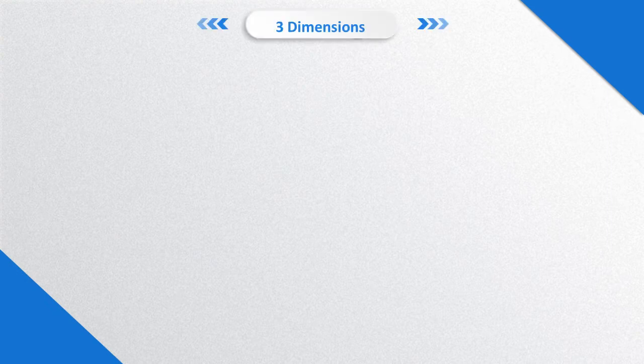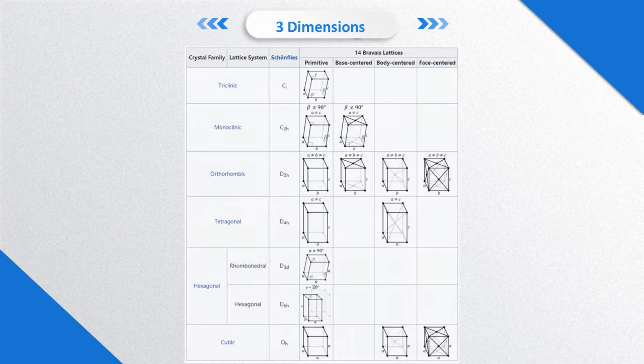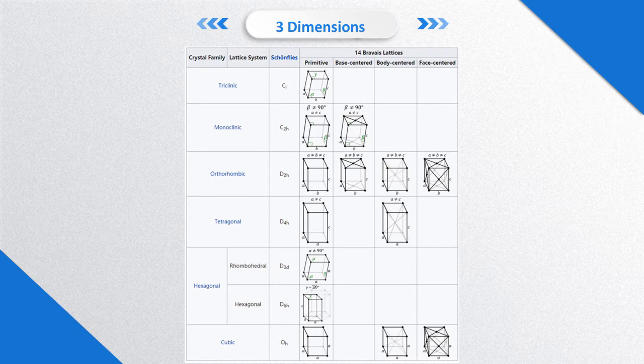In three-dimensional space, there are 14 Bravais lattices. These are obtained by combining one of the seven lattice systems with one of the centering types.